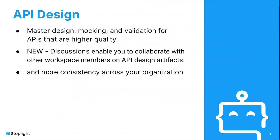Stoplight's API design features allow you to develop quality APIs with a collaborative, API design-first philosophy. It helps create and prototype APIs using our intuitive visual editor for OpenAPI specifications, and you can create your APIs in line with industry best practices. Also with the release of Discussions, members can add comments, ask questions, and interact within the Studio interface. Discussions also integrates with popular task tools like Jira and Slack to help facilitate collaboration outside of your workspace.